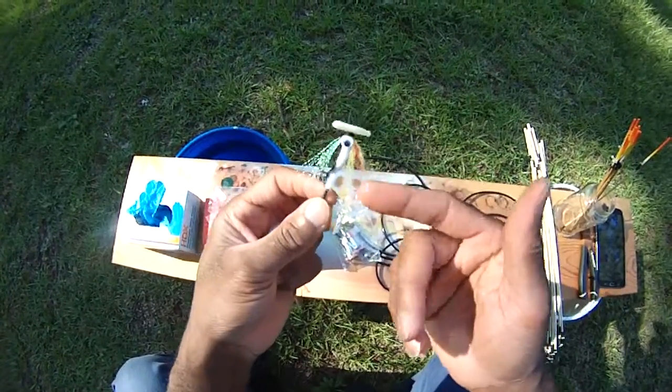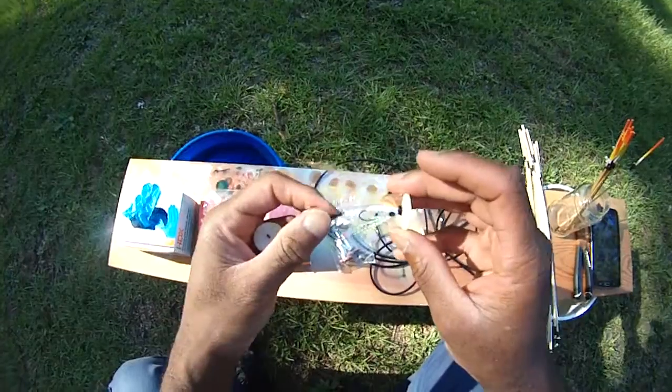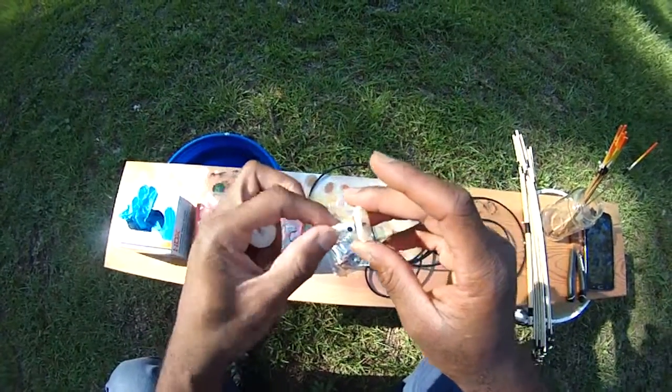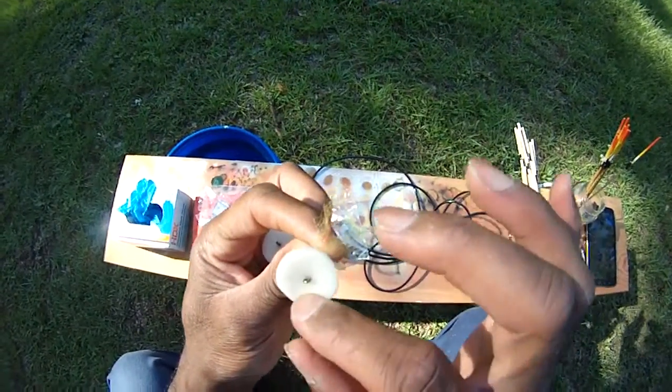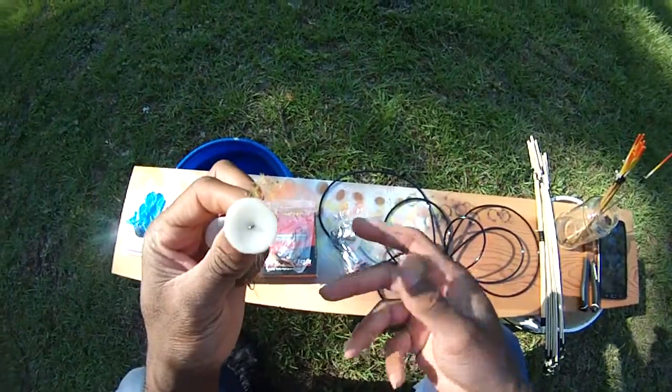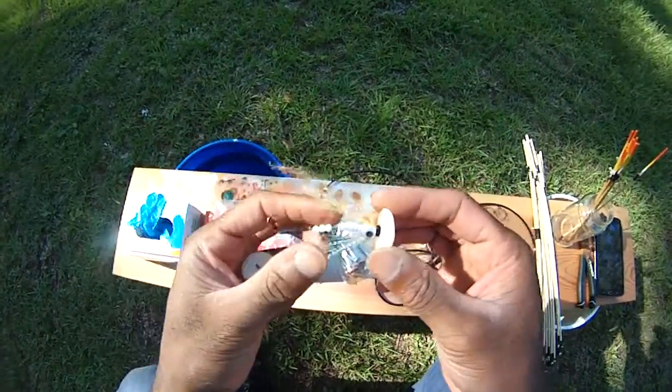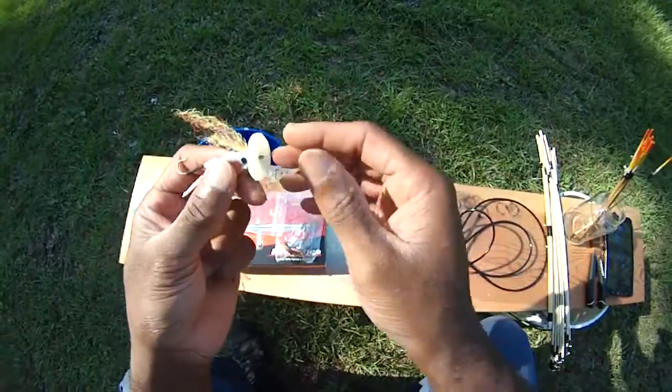Now the thing that makes these things work is that they all have a dodger disc on them. Let me show you what I mean. The dodger disc, if you've done much bass fishing, you see a lot of crankbaits that have a lip on them that make them wiggle about in the water.